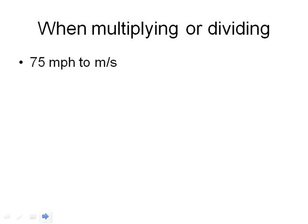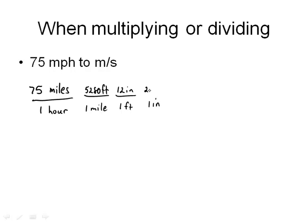Now if I'm multiplying or dividing in the unit case, I can do all that as well. So let's convert 75 miles per hour to meters per second. So I have 75 miles per one hour. That's what 75 miles per hour means. And so I'm going to start off by getting down to the units of meters. So 1 mile is 5,280 feet. 1 foot is 12 inches. 1 inch is 2.54 centimeters. And 100 centimeters is 1 meter. So there are all of my 1 values in converting from miles to meters.